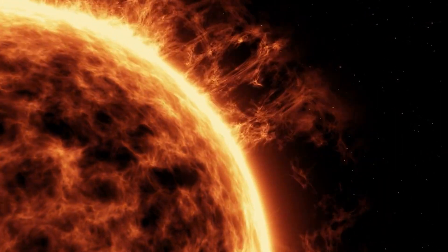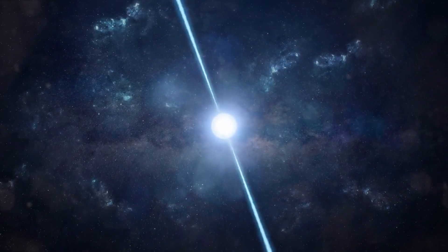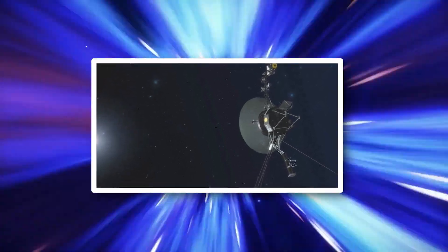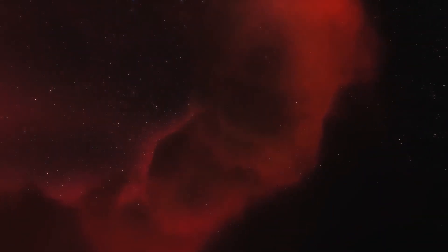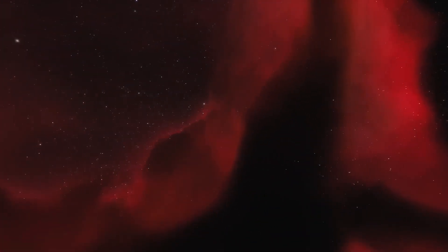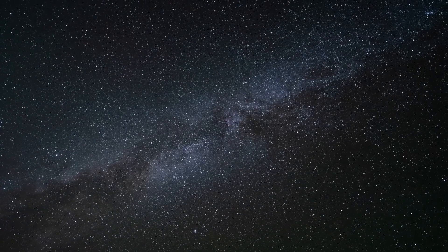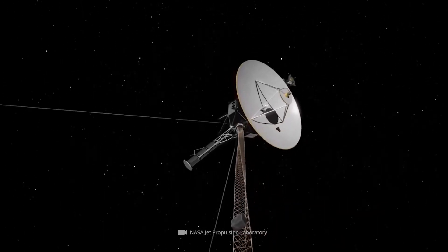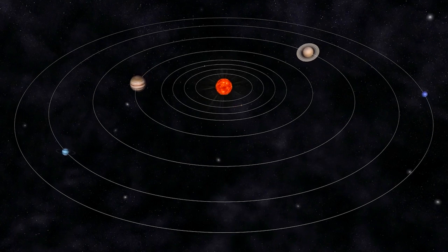In August 2012, Voyager 1 exploded into interstellar space after leaving the heliosphere, a vast bubble of charged particles that the sun blows around itself. A study that was released in 2013 made the discovery public. The findings were made public after Voyager 1's plasma wave detector captured a strong solar explosion between April 9 and May 22, 2013.